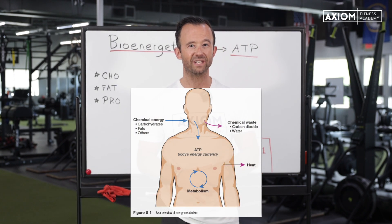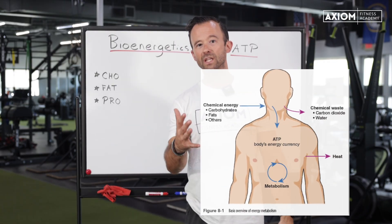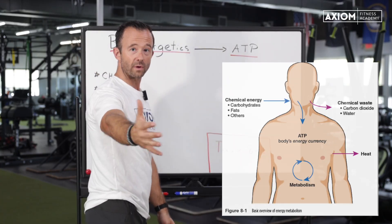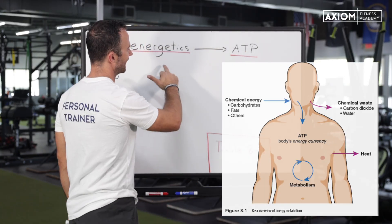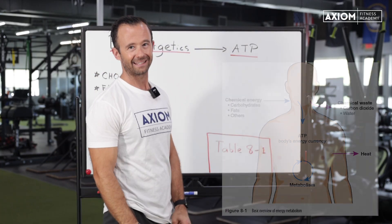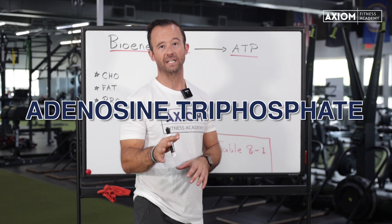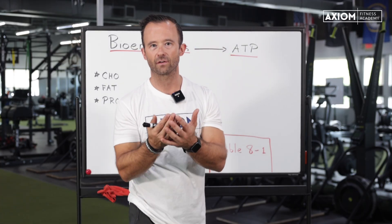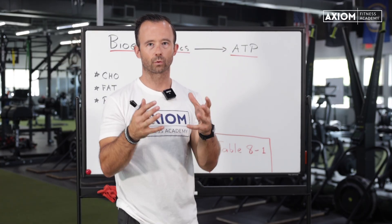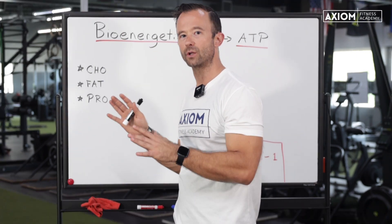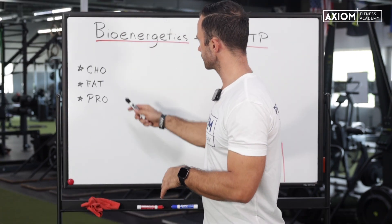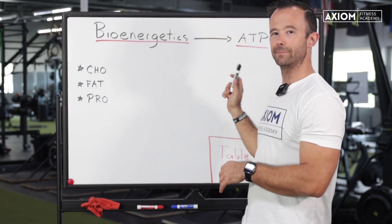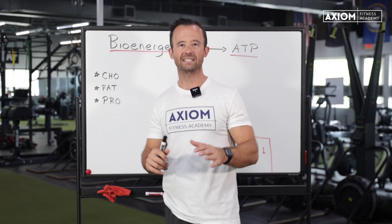What you do need is a good understanding of what bioenergetics is. You can see the image on screen that gives you a good visual. Really, what it is is our process of taking food — macronutrients, carbs, proteins, and fats — and turning it into ATP, adenosine triphosphate. That's the energy currency inside of ourselves. The role of bioenergetics is really just understanding how we use three energy systems to break down food and turn it into ATP. That's as complicated as you need to get.